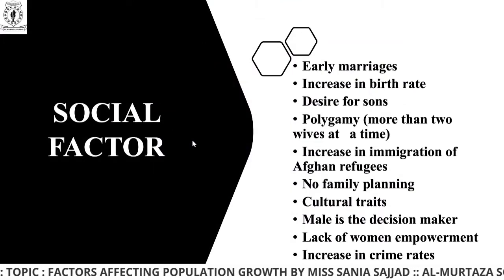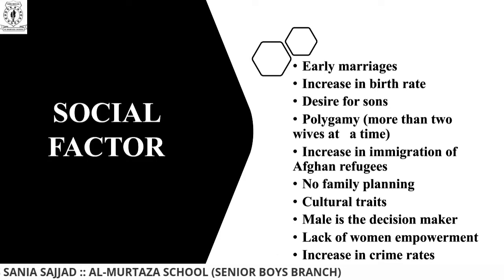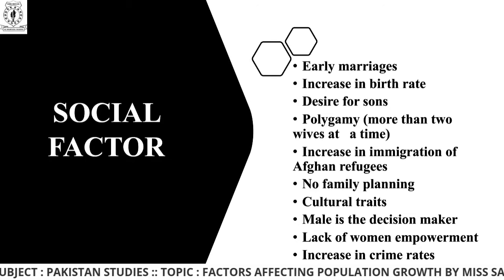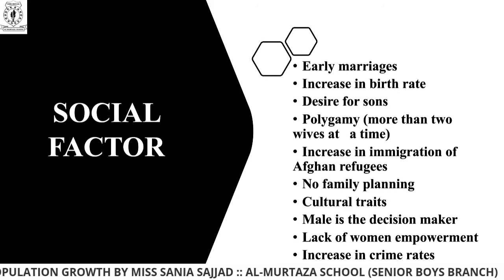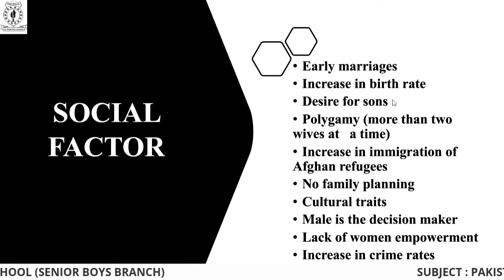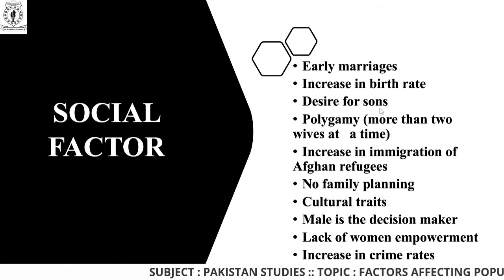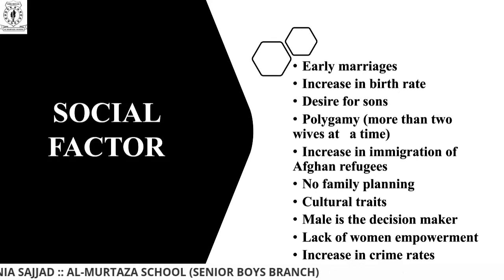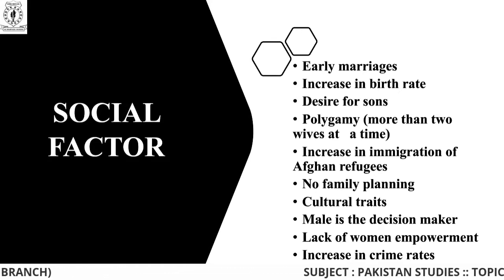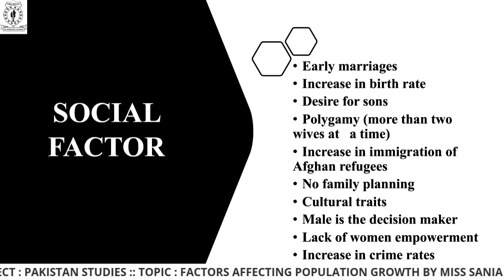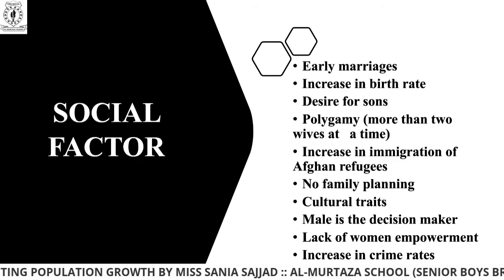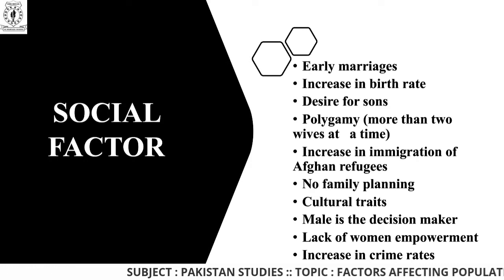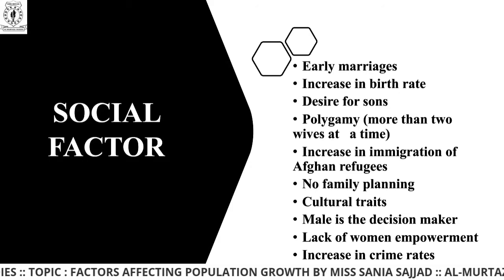Social factor plays a very important role in population growth. Number one is early marriages — it happens in our society that early marriages are still preferred, especially in village life. The major reason is to expand families. There is an increase in birth rate and a desire for a son. People — not only in villages but also in urban areas — require more children. The son is expected to look after the business, job, and feed the family. Women empowerment is enhancing day by day, but still there are places in Pakistan, especially villages, where women are not getting freedom to study.